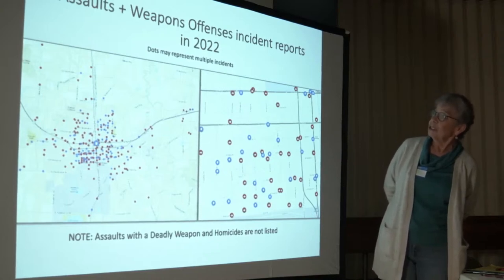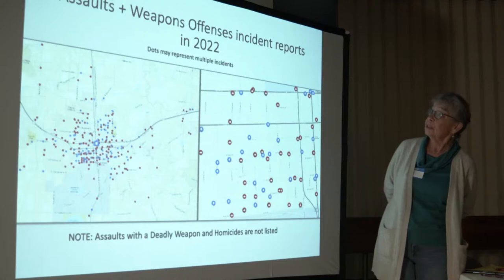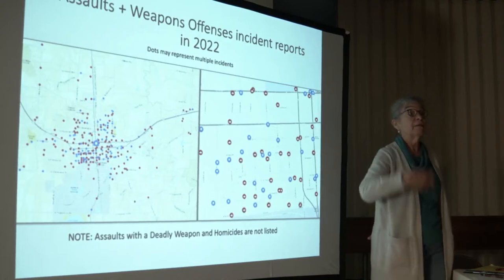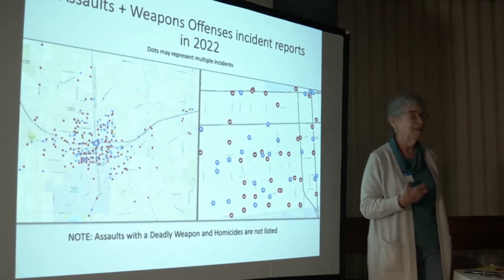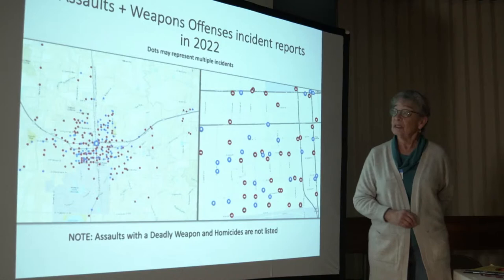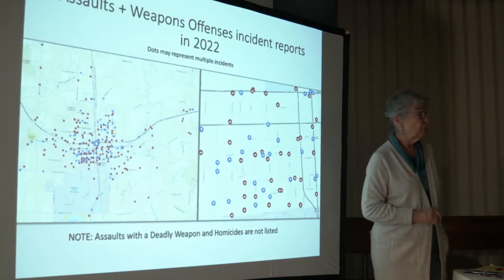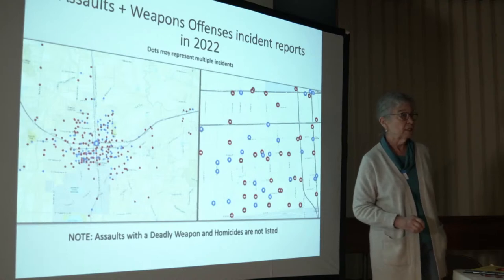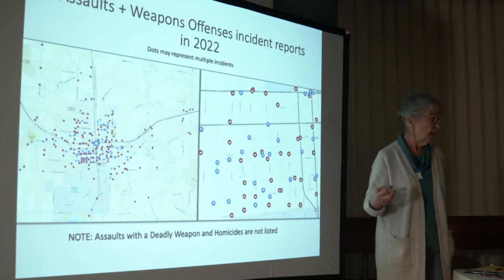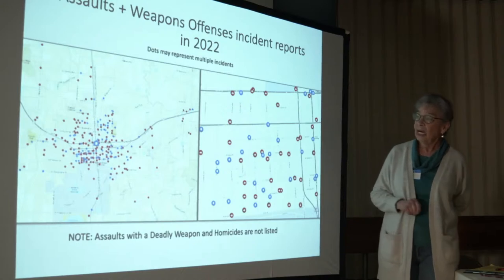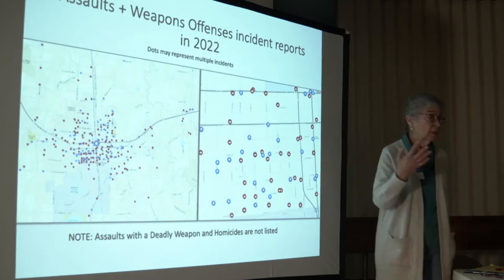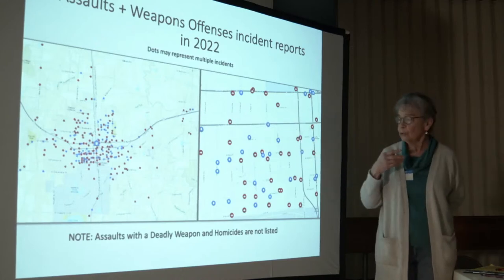I did a little map of assaults plus weapons offense incidents for the whole city in 2022. I didn't try to transcribe the whole city — it was enough work just doing the harbor district. I wanted to see where murders were happening, but homicides are not listed on the city map, nor are assaults with a deadly weapon. We did have two homicides in the harbor district — one domestic, the other apparently one of these feuds or something.